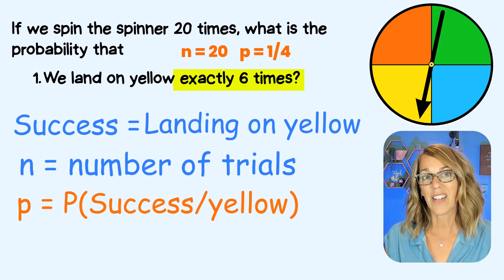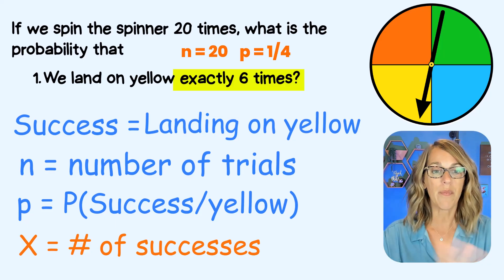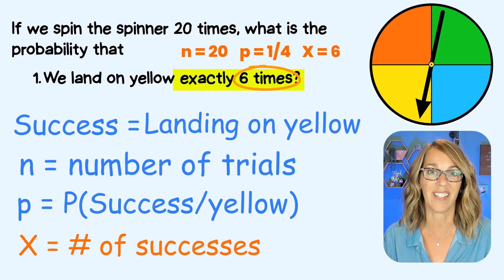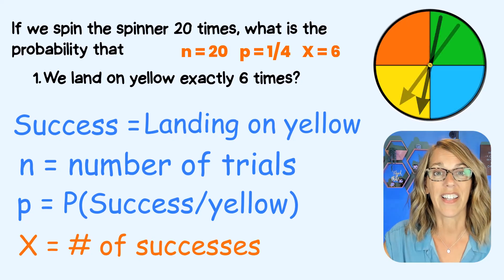Finally, for the calculator, we need to know the number of successes, and we want to know exactly six times. So the number of successes is equal to six. Let's bring our calculator up.